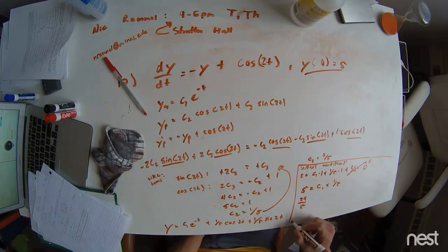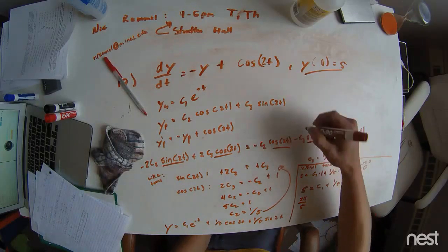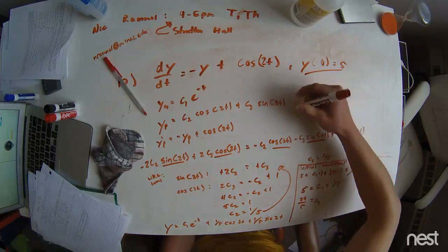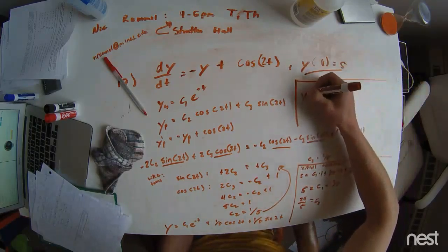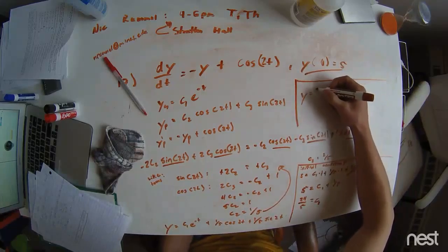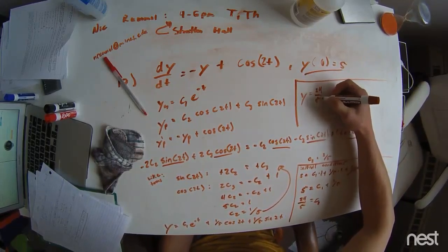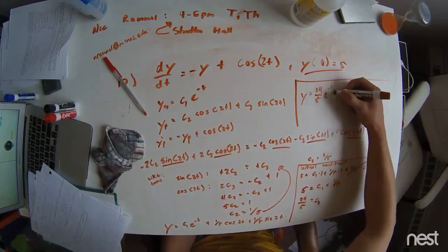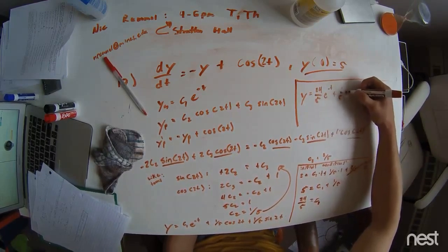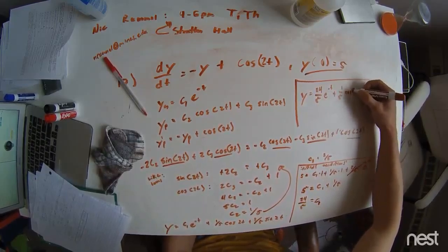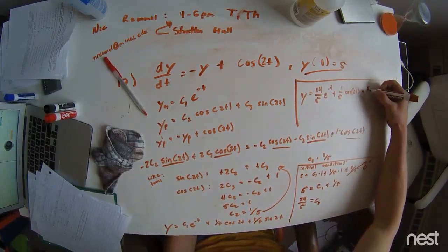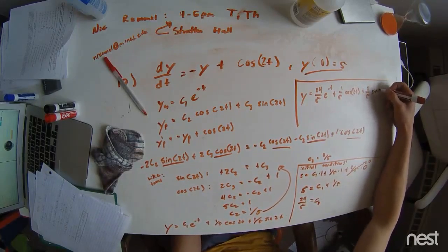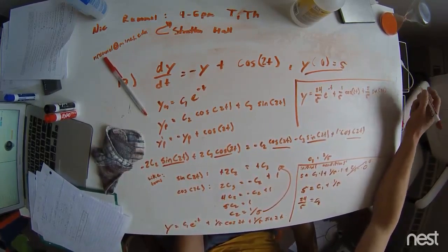Alright, and now we're just going to get our explicit solution. I'm sorry, this is kind of roundabout, but this is equal to c1. So I'm just going to box your final solution. Your final solution should be 24 fifths times e to the negative t plus 1 fifth cosine of 2t plus 2 fifths sine of 2t.